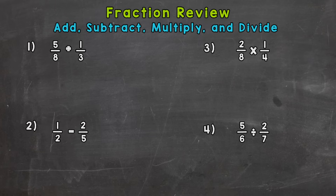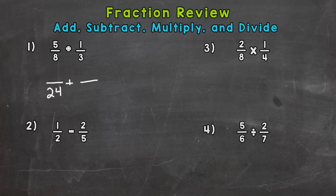So let's jump right into number one here, where we have addition: 5 eighths plus 1 third. Now with adding fractions, we cannot just start adding straight across. We need to make sure we have a common denominator first. Our denominators are 8 and 3, so the common denominator will be whatever the least common multiple is. The least common multiple for 8 and 3 is 24. So I'm going to rewrite these fractions below with a denominator of 24, renaming them using equivalent fractions so they both have a denominator of 24.